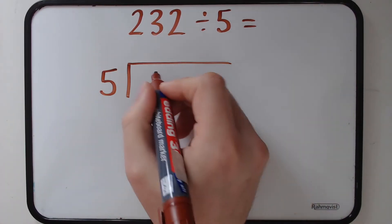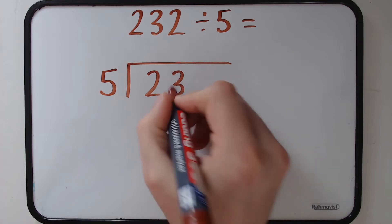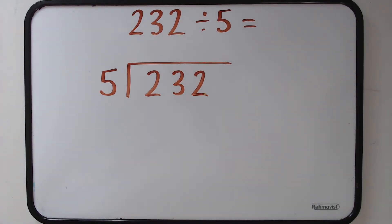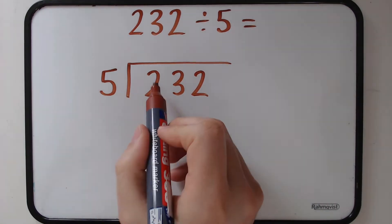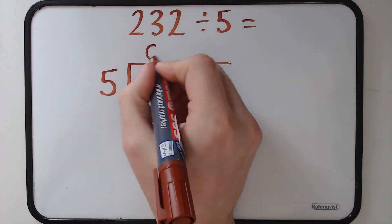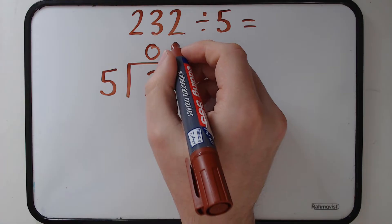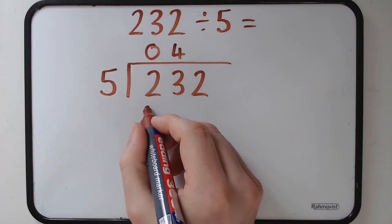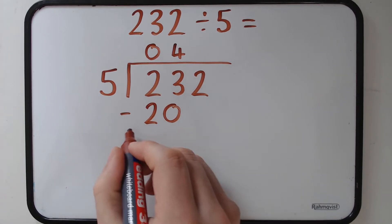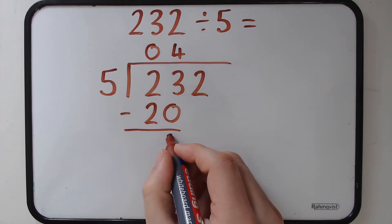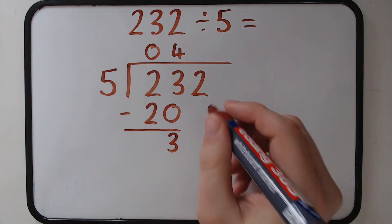So I'm going to lay it out the same as the other question. 5 on the outside, 232 on the inside. How many 5s go into 2? We can't fit any in so we have 0. Now it's how many 5s go into 23. I know that 4 times 5 is 20. So I know we can fit 4 in and we need to take away the 20 from the 23, which gives us a remainder of 3 at the moment.